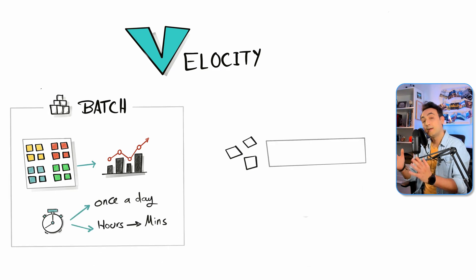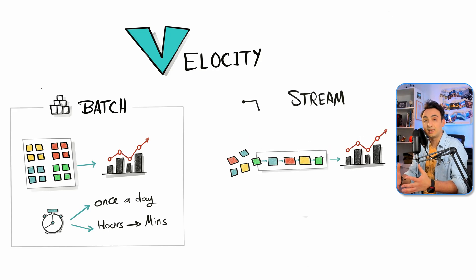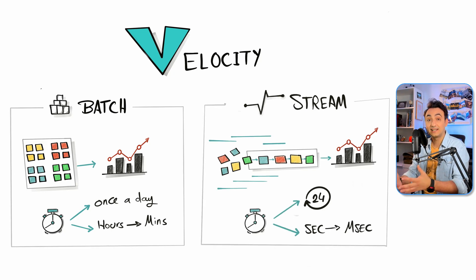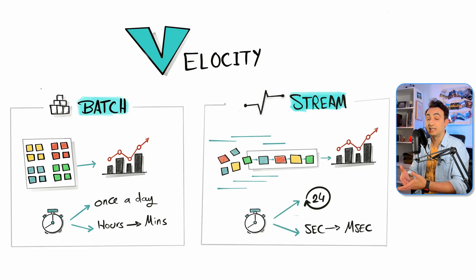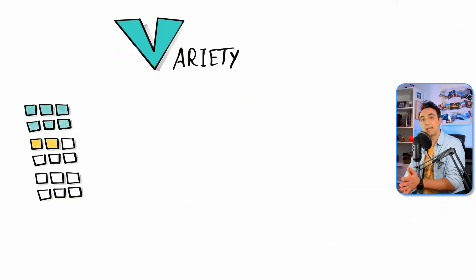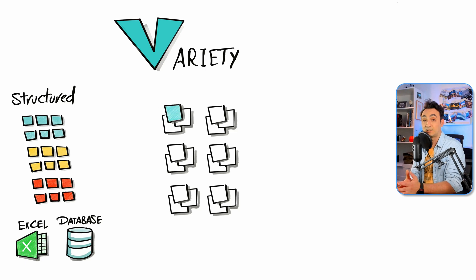The second V is Velocity. In normal data processing, we used to process slow data — or batch data — once a day or so, and then store it on disk. But in the big data world, sources are generating streams of data at very high speeds. That means we have to process and analyze the data in a real-time fashion and then store it in memory instead of on disk.